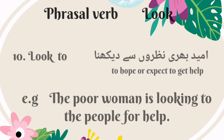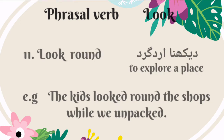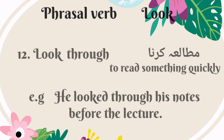The tenth phrasal verb is 'look to.' It means to hope or expect to get help — Urdu mein is ka matlab hai umeed bhari nazoroh se dekhna. For example: the poor woman is looking to the people for help. The eleventh phrasal verb is 'look round.' It means to explore a place — Urdu mein is ka matlab hai irdh girdh dekhna. For example: the kids looked round the shops while we unpacked. The twelfth phrasal verb is 'look through.' It means to read something quickly — Urdu mein is ka matlab hai jaldi se mutala karna. For example: he looked through his notes before the lecture.